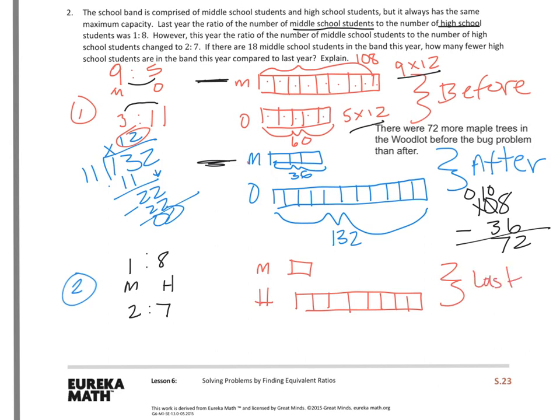And then the blue will be this year. And this year we have 2 to 7. So my statement, the big one here, is 18 middle school students in the band this year. So for middle school, this is equal to 18.